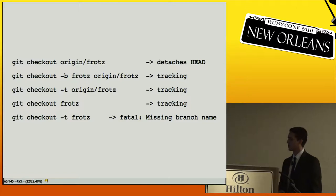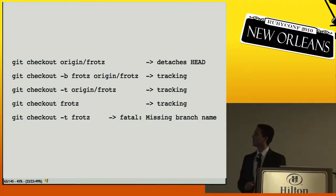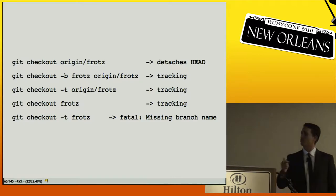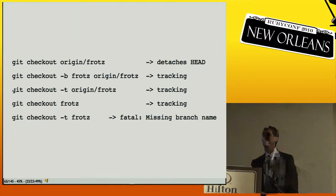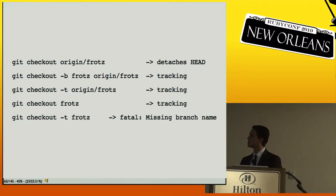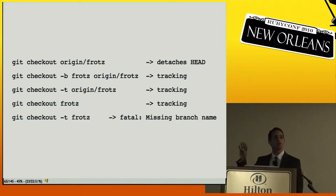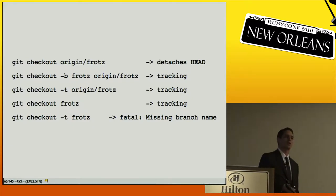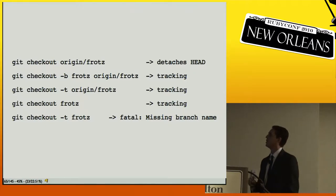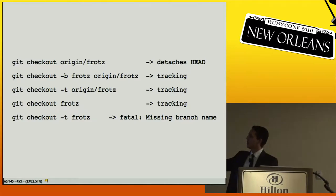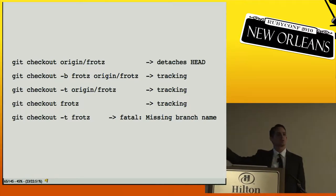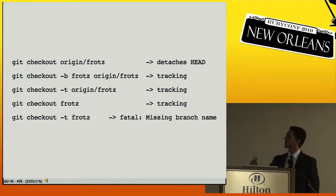First: `git checkout origin/frots` — this will detach your HEAD, which means your HEAD isn't pointing at any branch, so new commits won't move any branch forward. The only person I know who uses this effectively is the Git maintainer. Second: `git checkout -b [branch-name] [remote-branch]` — this sets up the branch as tracking automatically. I think this is the clearest and most straightforward way.